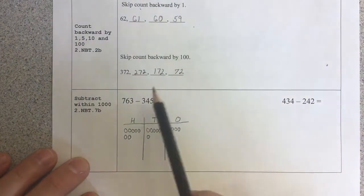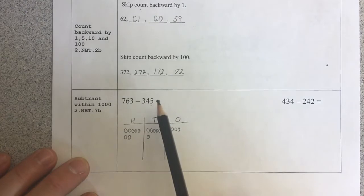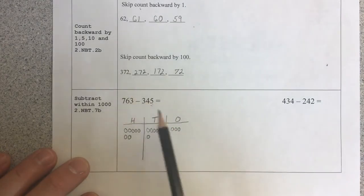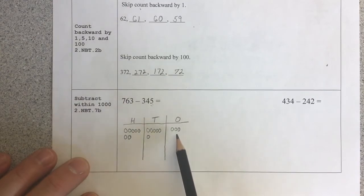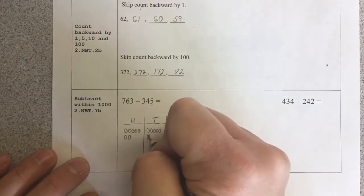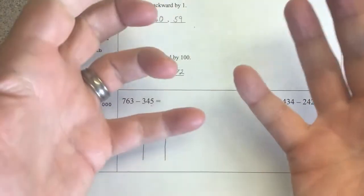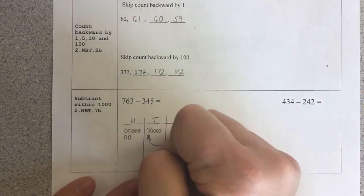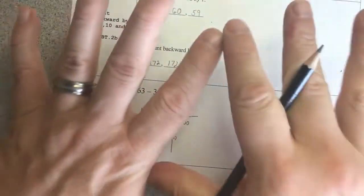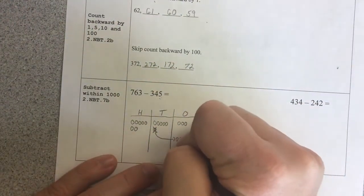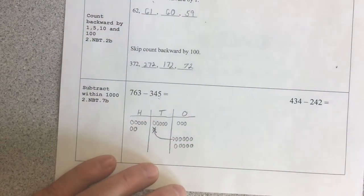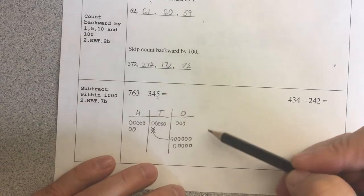Now, I'm taking away 345. So first thing I look at is I want to see, do I have enough in each place. I need to cross off 5 ones. I only have 3 ones. So that tells me I need more ones. So I'm going to go over to the tens place. I'm going to put an X to show that I'm decomposing or breaking it apart. Draw my arrow to show it moving over to my ones place. Now, 1 ten equals 10 ones. 1, 2, 3, 4, 5, 6, 7, 8, 9, 10.